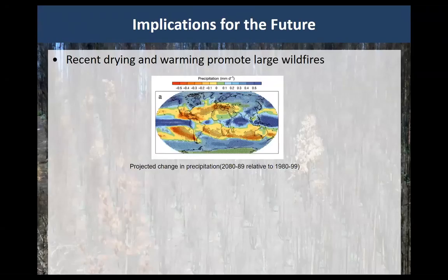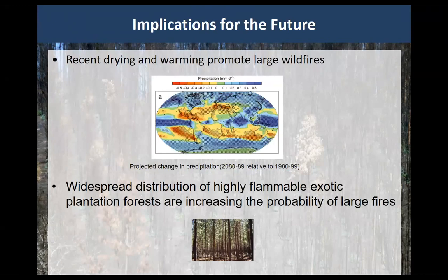To wrap up: projections for the effects of Hadley cell expansion and subsidence for central Chile extend into the next 100 years or so — it's going to continue to dry out, and eventually you'll see a shift in Mediterranean vegetation further south into Chile. Right now, much of central Chile has transitioned to plantation forests — highly flammable vegetation — so that combination is going to promote a lot of fire activity in decades to come.